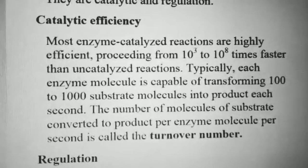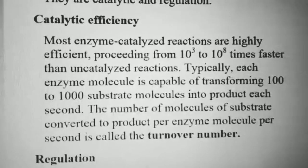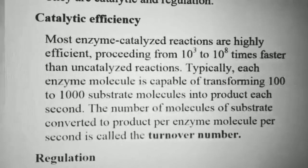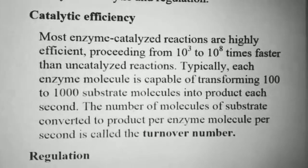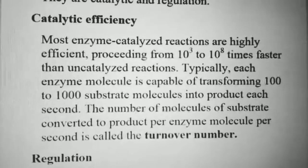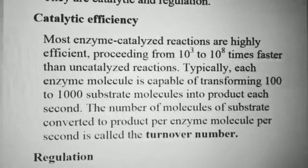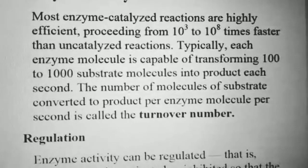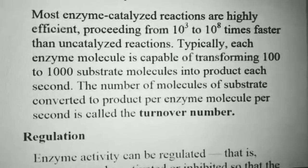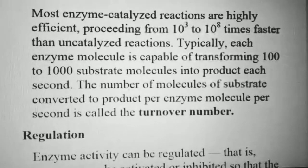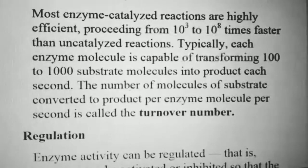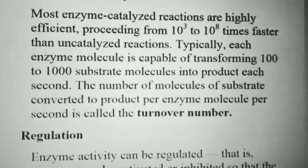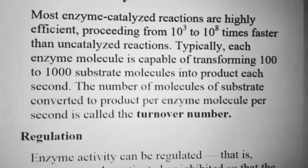Chemical efficiency refers to how fast an enzyme can speed up a chemical reaction. Most enzyme-catalyzed reactions are highly efficient, proceeding from 10³ to 10⁸ times faster than the uncatalyzed reaction. Typically, each enzyme molecule is capable of transforming hundreds to thousands of substrate molecules into product each second. The number of substrate molecules converted to product per enzyme molecule per unit time is called its turnover number.